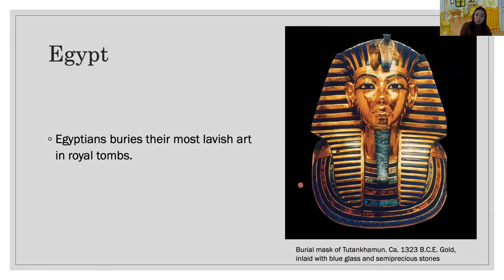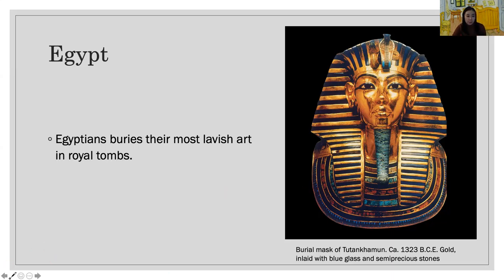The Egyptians buried their most lavish art in royal tombs. Rulers were sent into eternity outfitted with everything they would need to continue life in the sumptuous style they had known on earth — such as furniture, jewelry, chariots, clothing, and artifacts of all kinds — because they believed life would continue after death in the tomb.